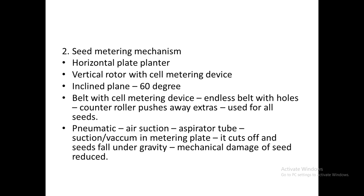In the belt with cell metering mechanism, there is an endless belt with a number of holes moving between pulleys. An extra roller pulley is provided along the belt to push away extra seeds falling into the holes. This mechanism can be used for all types of seeds, which is an advantage of the belt type seed metering mechanism.